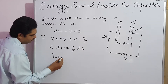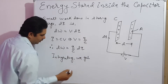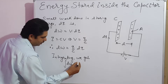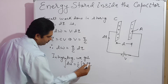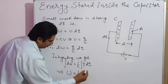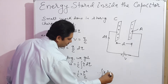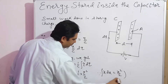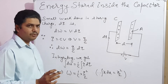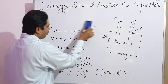Integrating: take 1 by C outside, integration of Q DQ gives Q squared by 2. So W equals Q squared by 2C, because the integration of X DX equals X squared by 2. This work is stored in the form of energy known as potential energy.